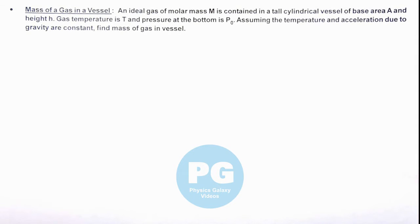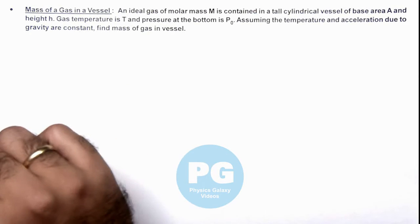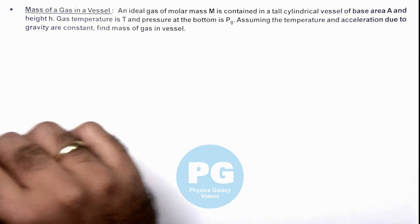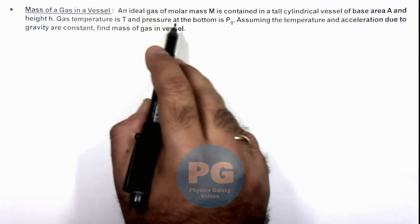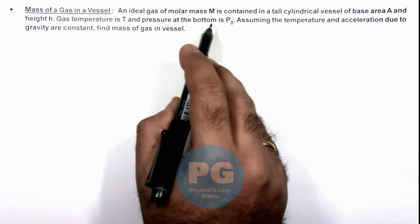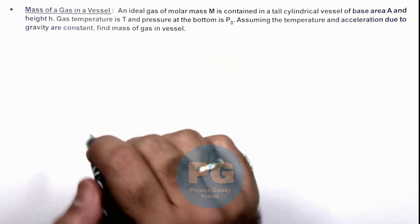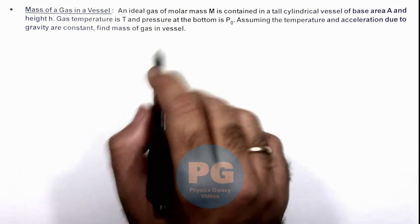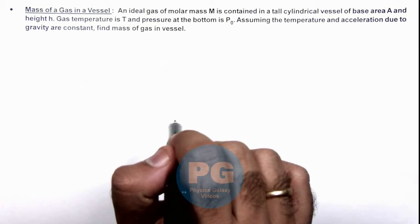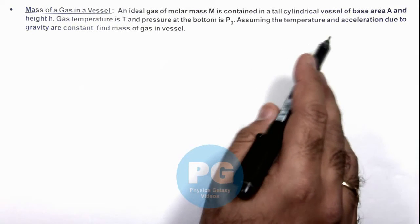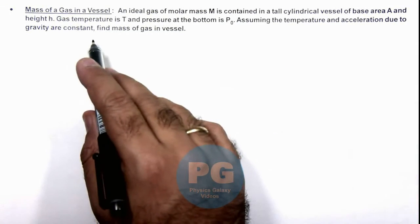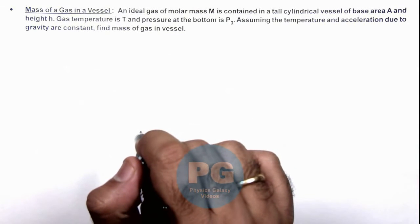Now, we'll be discussing in this illustration about mass of a gas in a vessel. Here we are given that an ideal gas of molar mass M is contained in a tall cylindrical vessel of base area A and height h. Gas temperature is T and pressure at the bottom is P₀. Assuming the temperature and acceleration due to gravity are constant, we are required to find mass of gas in the vessel.